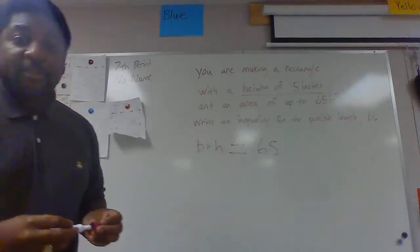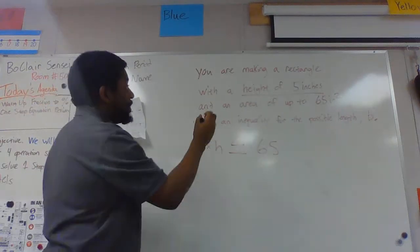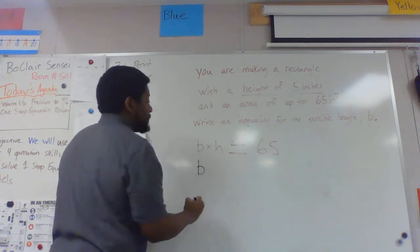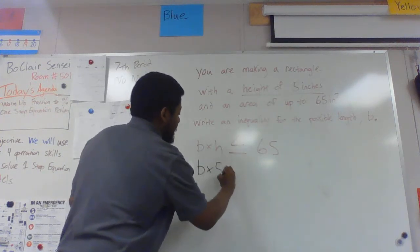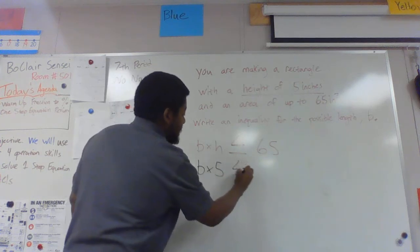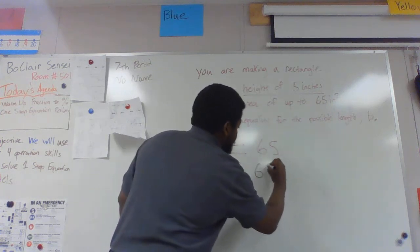We've talked about plugging in variables, that's actually what we're going to do here. b we don't know what it is, so I'm going to write the b still times 5 is less than or equal to 65.